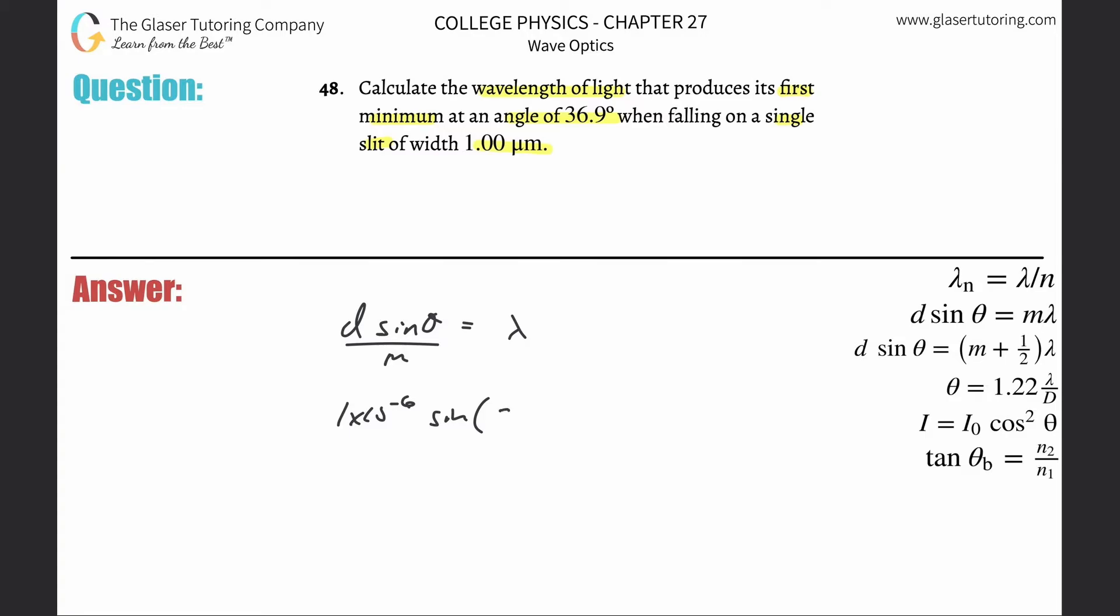What's the angle? 36.9. What's then M? It's first minimum. So voila. Right? Aren't these great? If only the test could be like this, right?